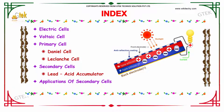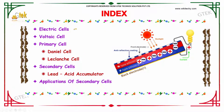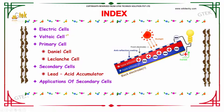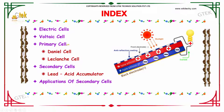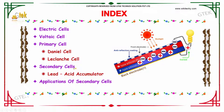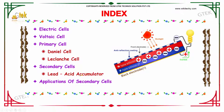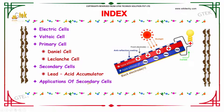This is the index we are going to see. First, we are talking about electric cells and voltaic cells, and we are going to talk about the primary cells — that's the Daniel cell and Leclanché cells — and the secondary cells. For secondary cells, we are going to talk about the lead acid accumulator, followed by the application of secondary cells.